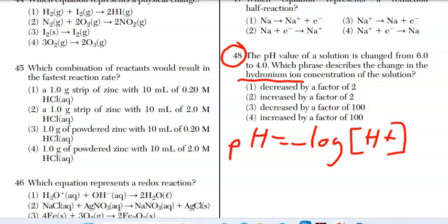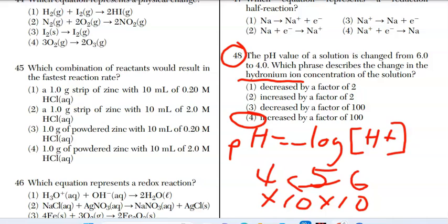Now, what I usually do with my students is we'll do some sort of number line. So the pH value of a solution is changed from 6 down to 4. We know as the pH gets lower, the hydronium ion, also known as the hydrogen ion, concentration, gets larger. It gets more acidic. So in order to go from 6 to 4, you've got to go from 5. So we have a factor of 10 increase in the hydronium ion concentration and then another factor of 10. And 10 times 10 is 100. So the hydronium ion concentration increased by a factor of 100. Which is choice 4.